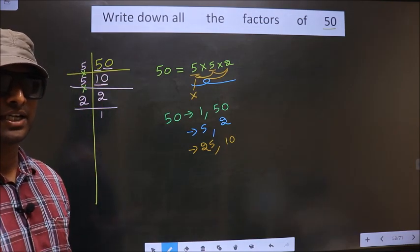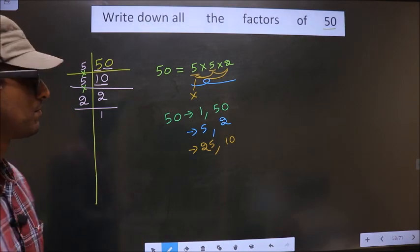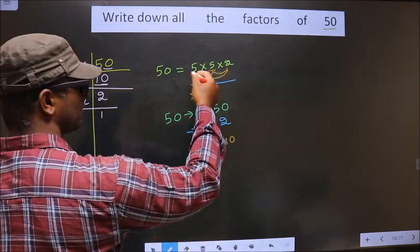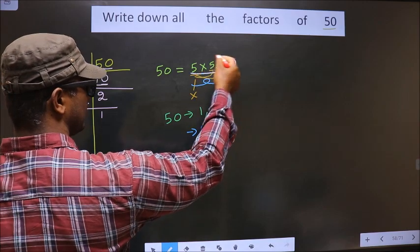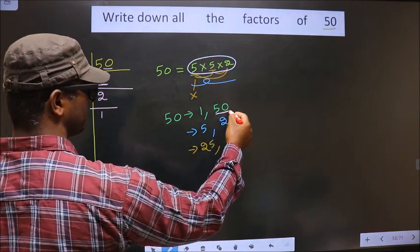Now, you take a combination of three numbers. If we take a combination of three numbers, if we take all the three numbers, we get 50 itself.